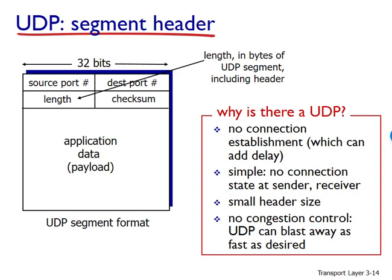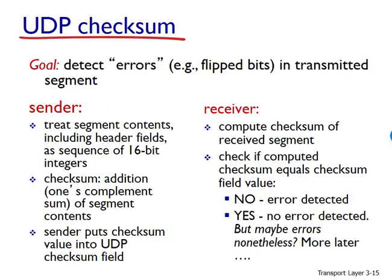The checksum is used by the receiving host to check whether errors have been introduced into the segment. The checksum is also calculated over a few of the fields in the IP header in addition to the UDP segment. UDP's checksum provides for error detection — that is, the checksum is used to determine whether the bits within the UDP segment have been altered by noise in the links or while stored in a router as it moved from source to destination.